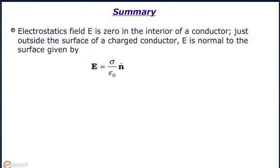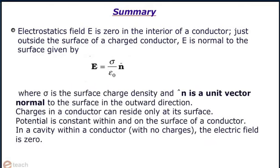Electrostatic field E is zero in the interior of a conductor. Just outside the surface of a charged conductor, E is normal to the surface given by E equals sigma by epsilon naught n cap, where sigma is the surface charge density and n cap is a unit vector normal to the surface in the outward direction. Charges in a conductor can reside only at its surface. Also, potential is constant within and on the surface of a conductor. In a cavity within a conductor with no charges, the electric field is zero.